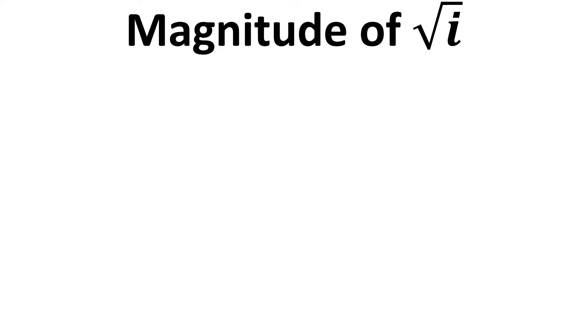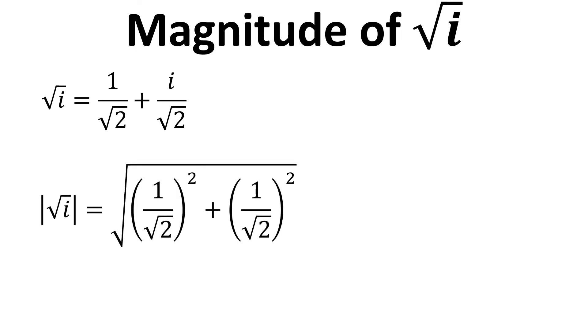So the magnitude of square root of i can be gotten by using the Pythagoras theorem. We just consider the two sides of the right angle triangle that this produces on a graphical plane, so we square the magnitude of both and then square root. If we square those terms we get a half plus a half which is the square root of 1 which just equals 1. So the magnitude of root i is 1.